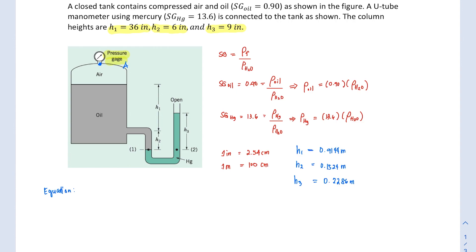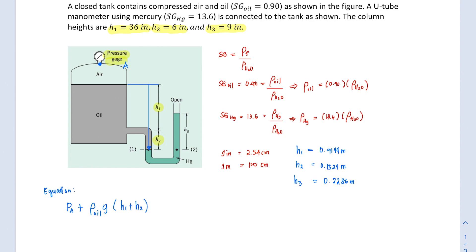Starting from point A at the top and going down: we have pressure p_A, and as we go down through the oil column the pressure increases. We add the pressure term: density of oil times g times the height of the oil layer. The oil height here is h1 plus h2, so that term is ρ_oil × g × (h1 + h2).